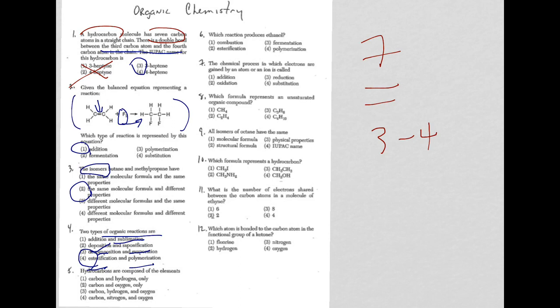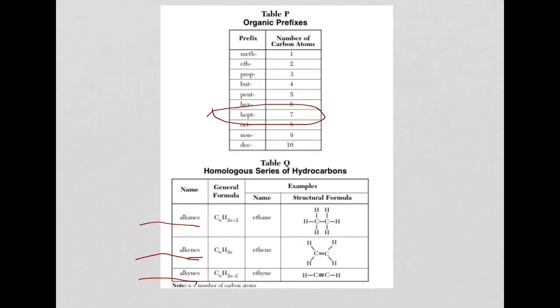Let's move on to question five. It says hydrocarbons are composed of elements. And of course, here we have hydro and carbon, so it's pretty easy to figure out. We're dealing with hydrogen and carbon only. So the answer is choice one. If you get confused with question five, you could take a look at table Q, hydrocarbons. Notice all carbons and hydrogens, no other elements. If you get yourself confused, it might be worth taking a look at the organic reference tables.